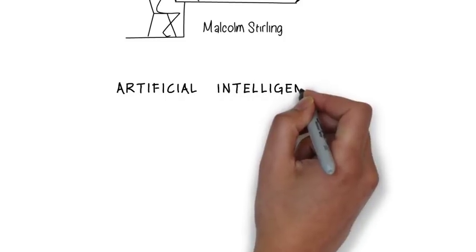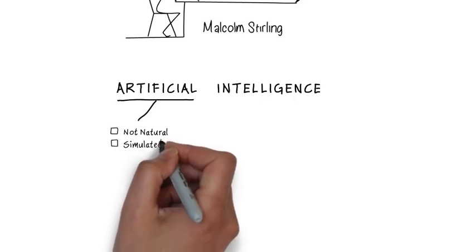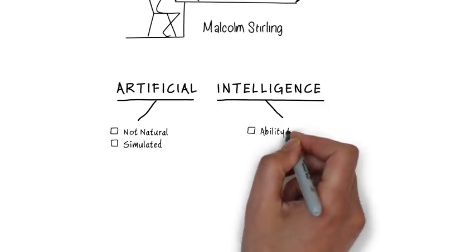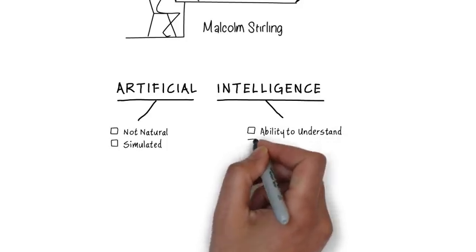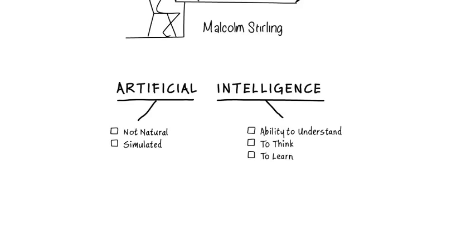Artificial means something that does not occur naturally. It's simulated, and by intelligence I mean the ability to understand, to think, and to learn. It's these characteristics that make machines appear smart.